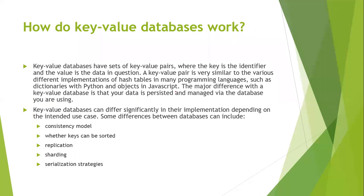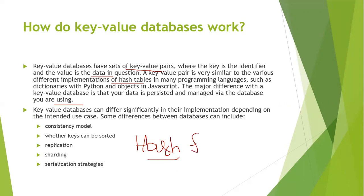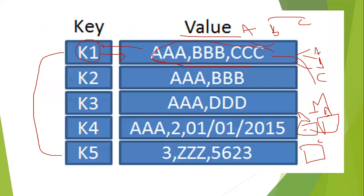A key-value database has a set of key-value pairs where the key is the identifier and the value is the data. A key-value pair is very similar to the various implementations of hash tables in many programming languages. The major difference is that in a key-value database your data is persisted and managed via the database. Keys and values are implemented using a hash function.